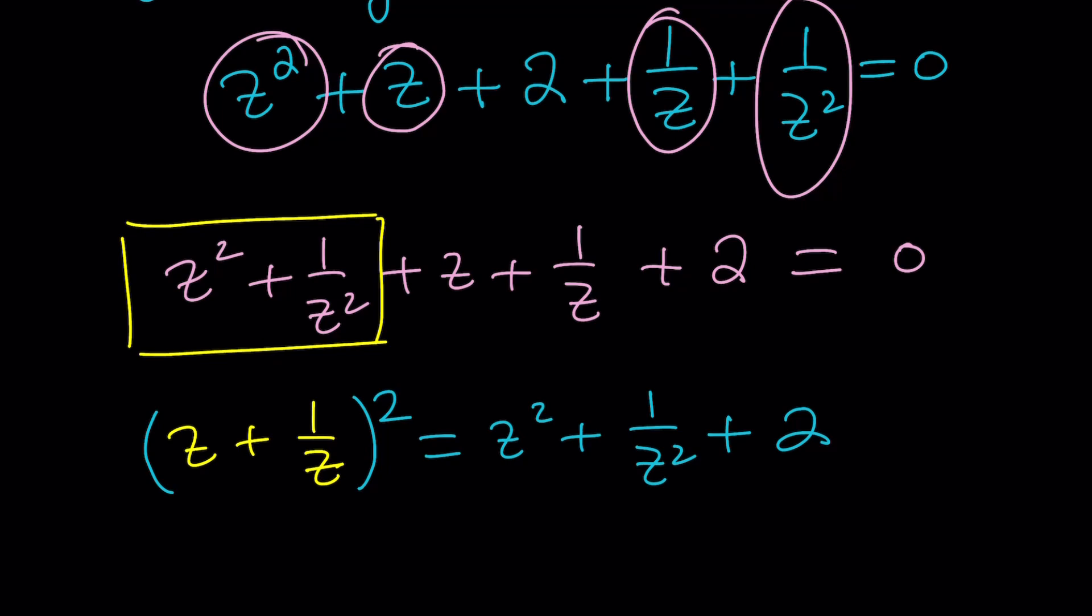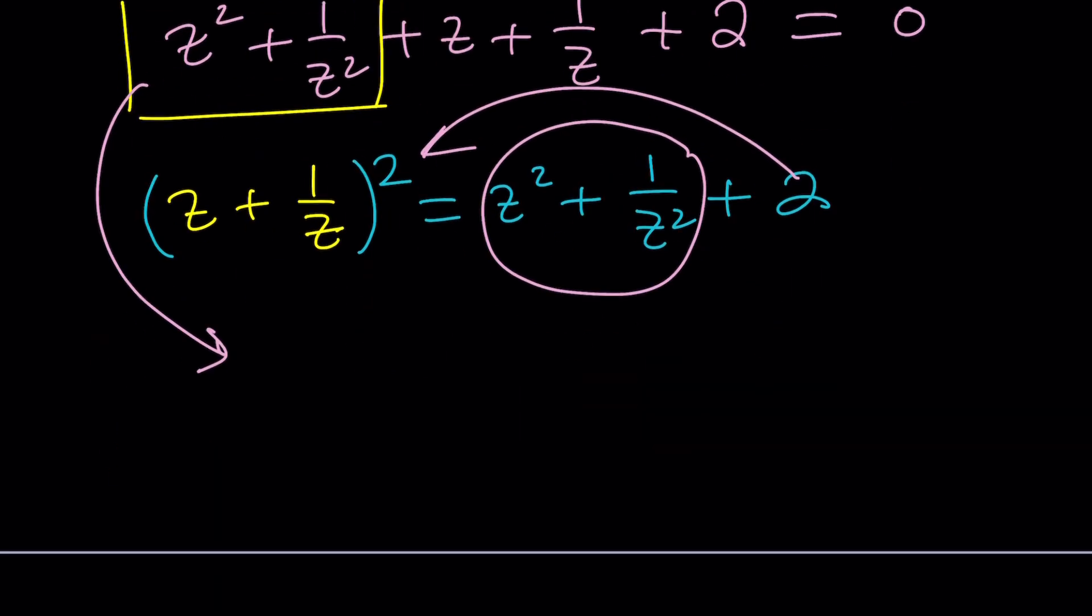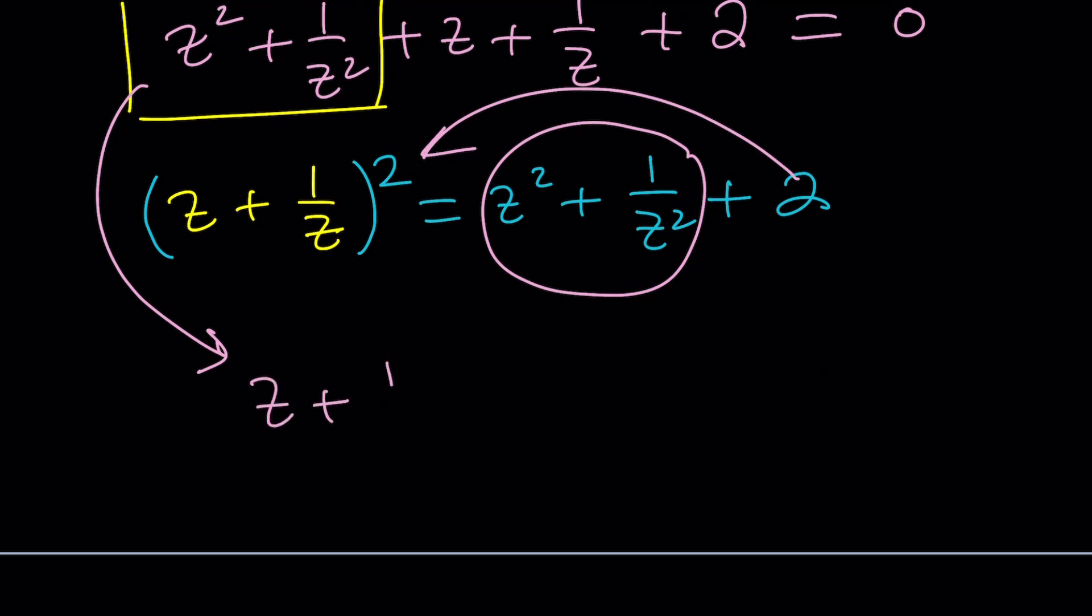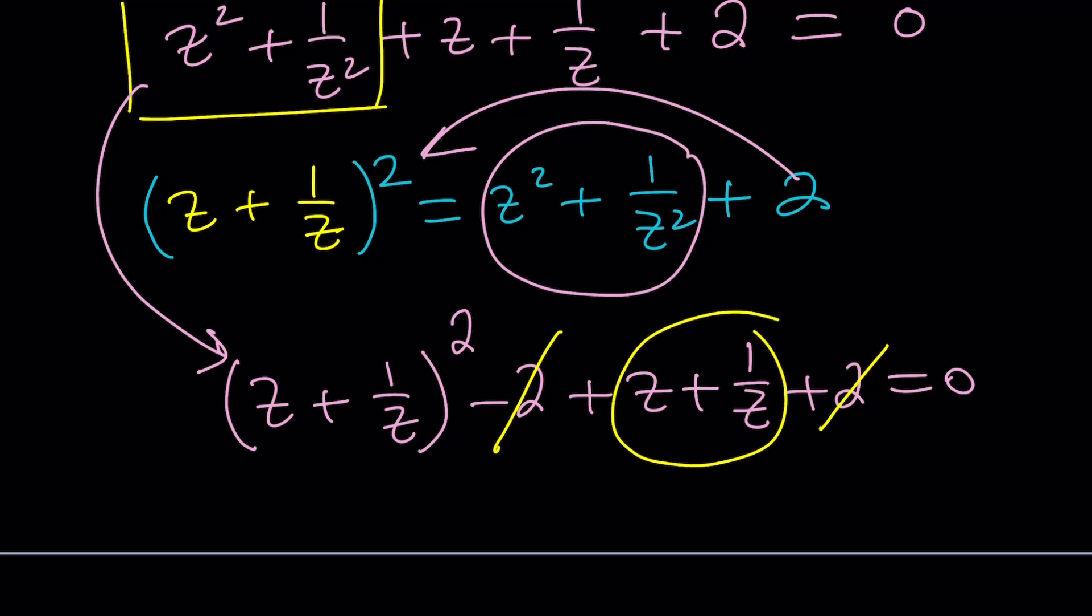So from here, I can go ahead and isolate this and write it as this squared minus 2. So let's take it up from there. Here, this is (z + 1/z)^2 - 2 + z + 1/z + 2 = 0. Awesome because -2 and +2 cancel out. And we're going to use an awesome method, which is called substitution. Let's go ahead and call this t, shall we?